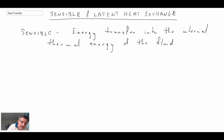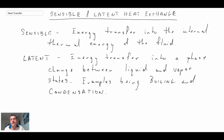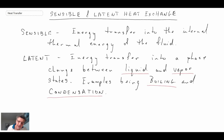Latent heat exchange is where the working fluid in our system is going through a phase change. Typically in this course we'll look at going from a liquid to a vapor and then from a vapor back to a liquid — the processes of boiling and condensation. We've encountered those in everyday life, but we'll be looking at them from a technical perspective and quantifying the heat transfer associated with these processes. Given that a lot of energy can go into a phase change, the heat transfer rates for boiling or condensation are very, very high.